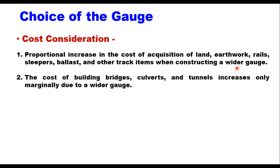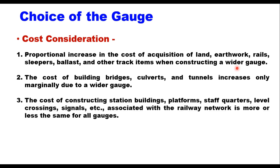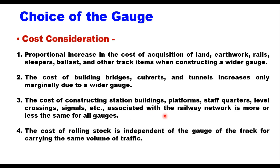The cost of building bridges, culverts, and tunnels increases only marginally due to a wider gauge — this cost does not change much with the width of the gauge. Similarly, the cost of constructing station buildings, platforms, staff quarters, level crossings, and signals are almost the same for all gauges. And the cost of rolling stock — meaning wagons, coaches, and engines — is independent of the gauge of the track for carrying the same volume of traffic.